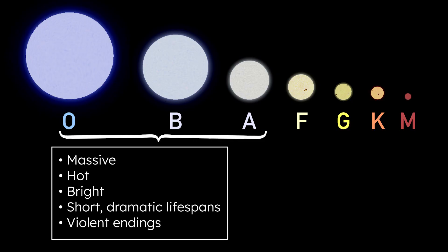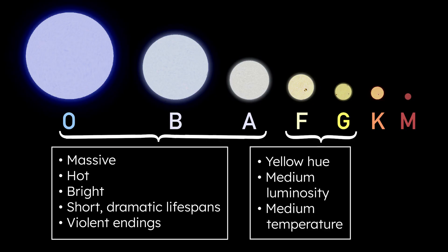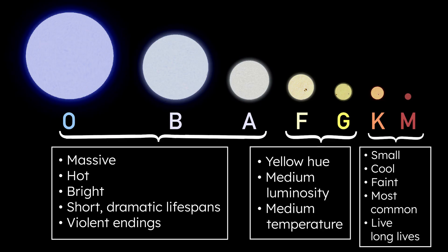Moving down the scales for size and temperature, we find the F and G-type stars. They glow with a yellow hue, and are in the middle of the spectrum in terms of luminosity and temperature. At the smallest end of the chart are the K and M-type stars. These stars are small, cool, and faint, but they're the most common type in the universe. They burn fuel slowly and live incredibly long lives.